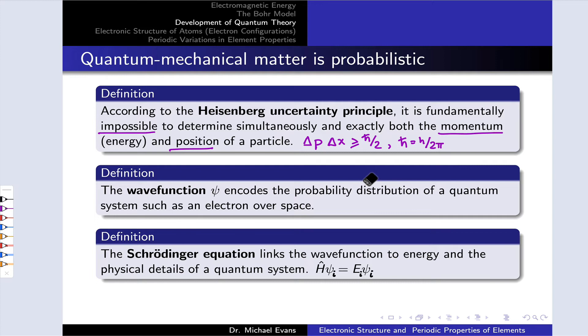That probabilistic understanding of where the electron might be located is encoded in mathematical form in what we call the wave function. It's the probability distribution of a quantum system like an electron inside an atom over space. The wave function itself is a function of three spatial variables, x, y, and z.